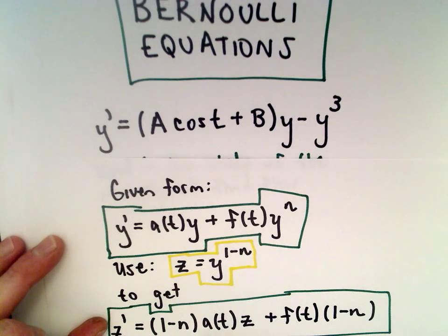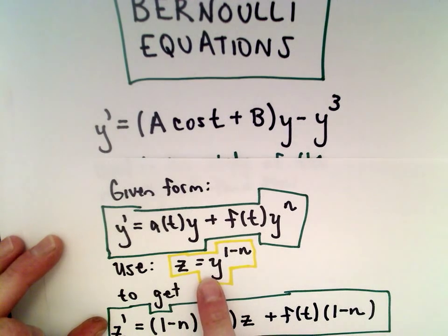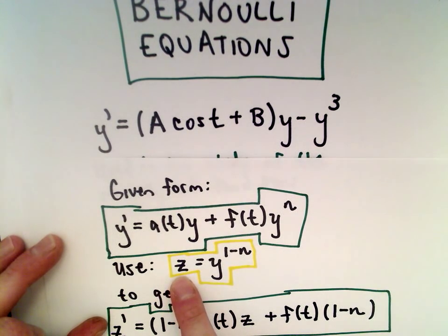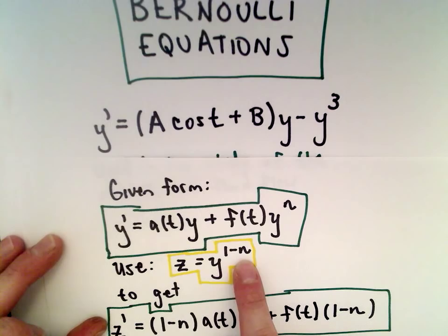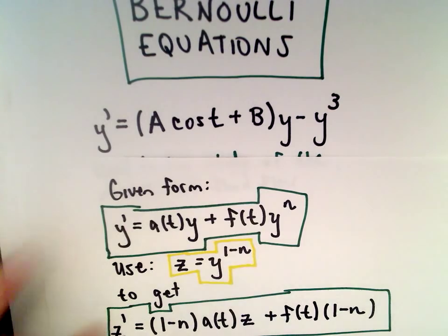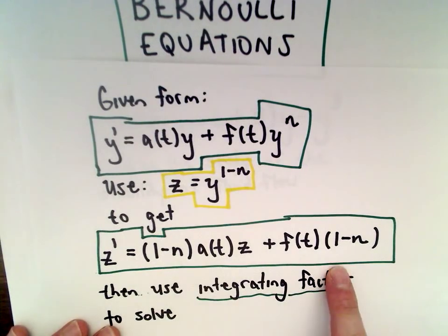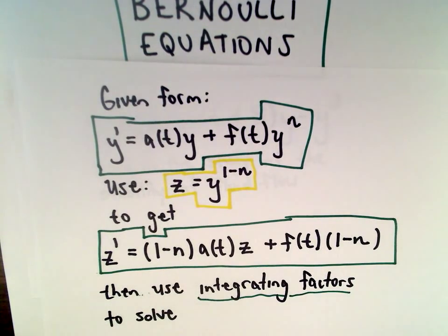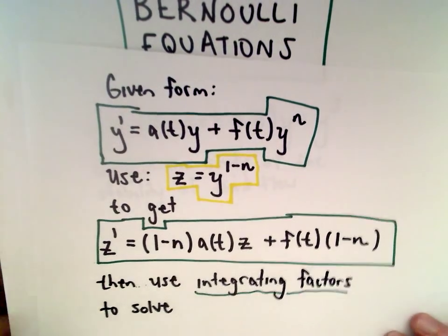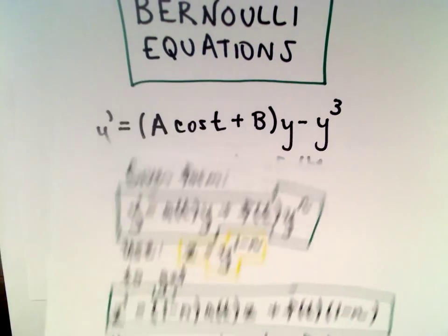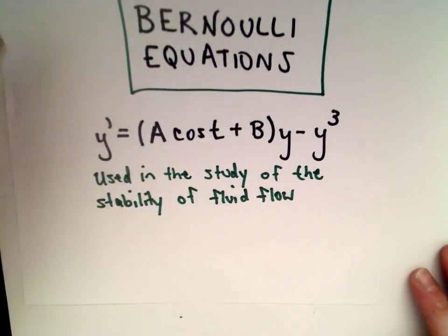That's what we have in this case. We're going to use the change of variables z equals y raised to the 1 minus n to get the following equation, and then solve that using integrating factors. I have other videos that go more in-depth on this process and why it works, so in this one I'm just going to dive right in.